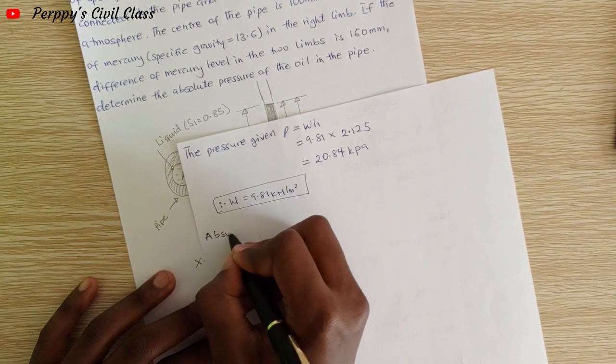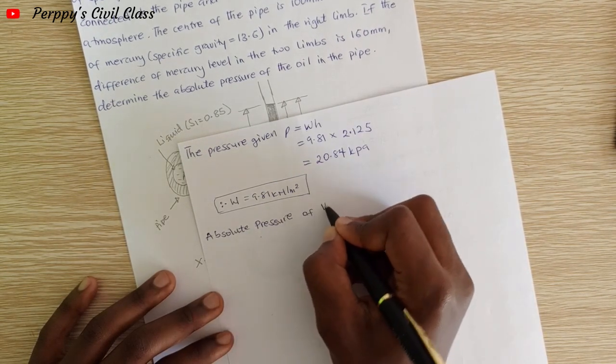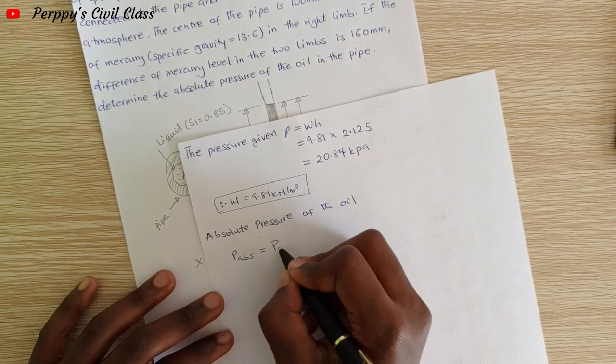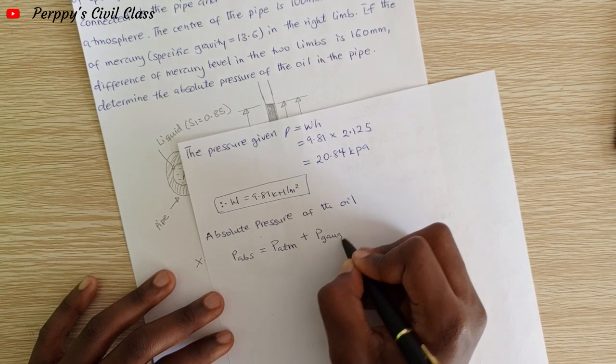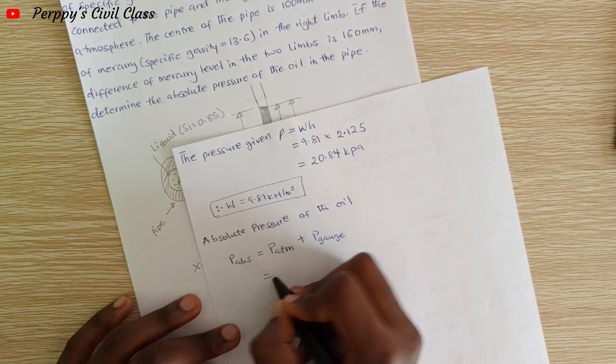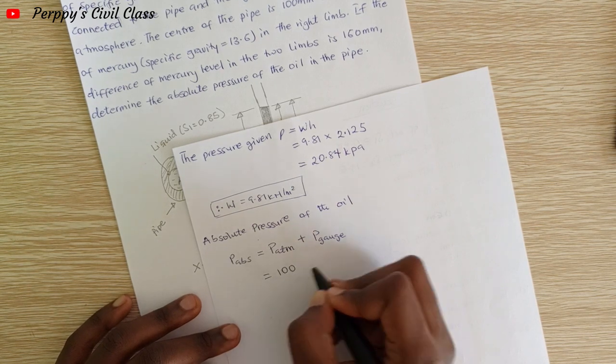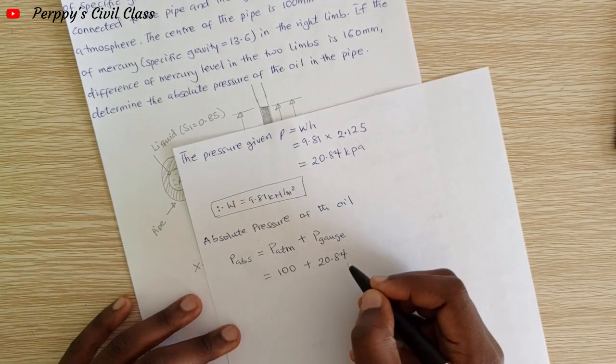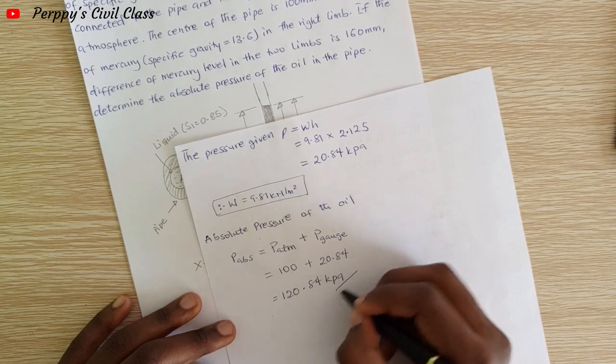The absolute pressure now: we have the pressure, so we can find the absolute pressure. P absolute equals atmospheric pressure plus P gauge. The atmospheric pressure is 100 plus the P gauge 20.84, which gives us 120.84 kilopascals.